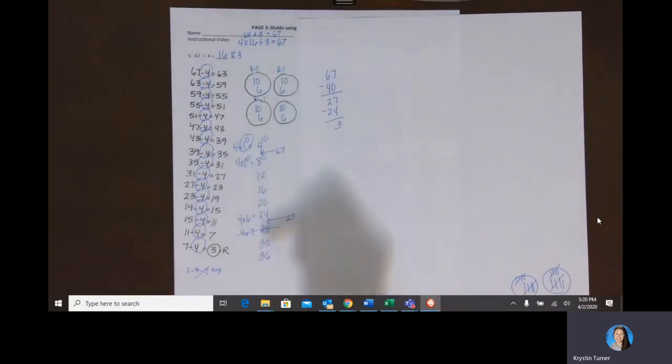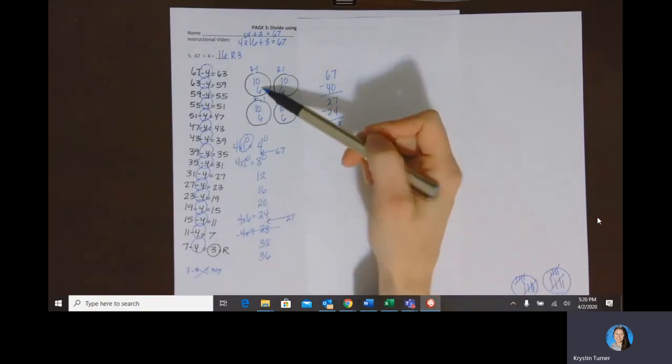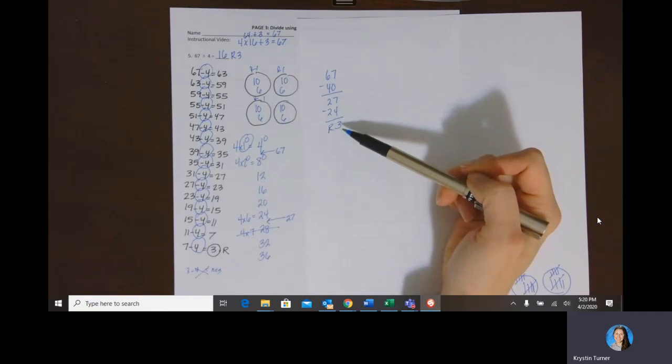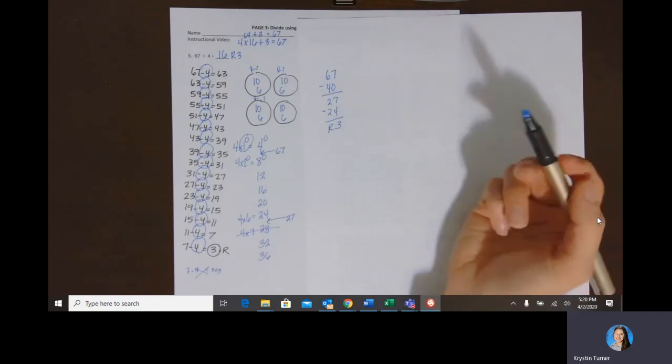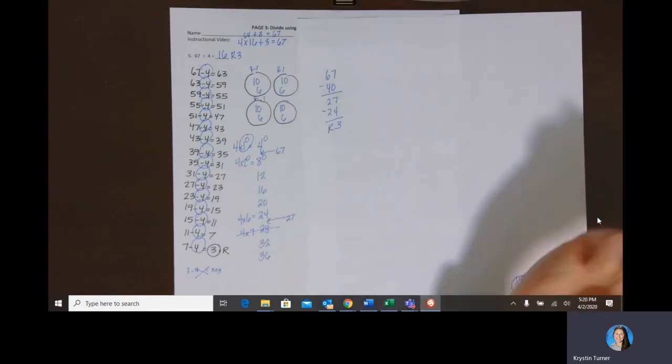So this is our remainder, this three. So then I would have 16 inside of each group, three that didn't fit inside. So it would be 16 remainder three.